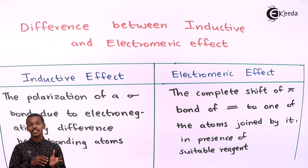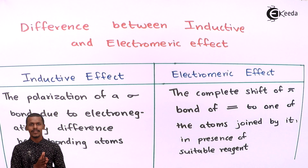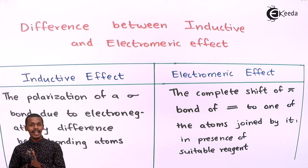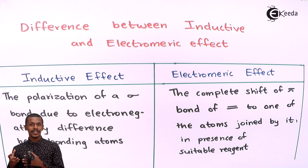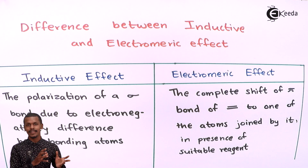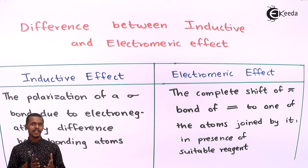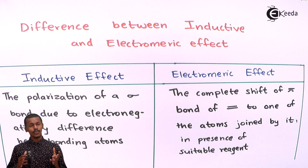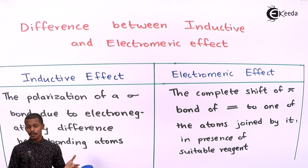Because of AlCl₃, we can see the shifting of electrons — one pi bond is displaced to a particular atom, forming an intermediate. The carbon acquires a positive charge while the group approaching the carbonyl acquires a negative charge, showing polarity. However, this kind of effect is basically temporary and depends on the suitable reagent being used.